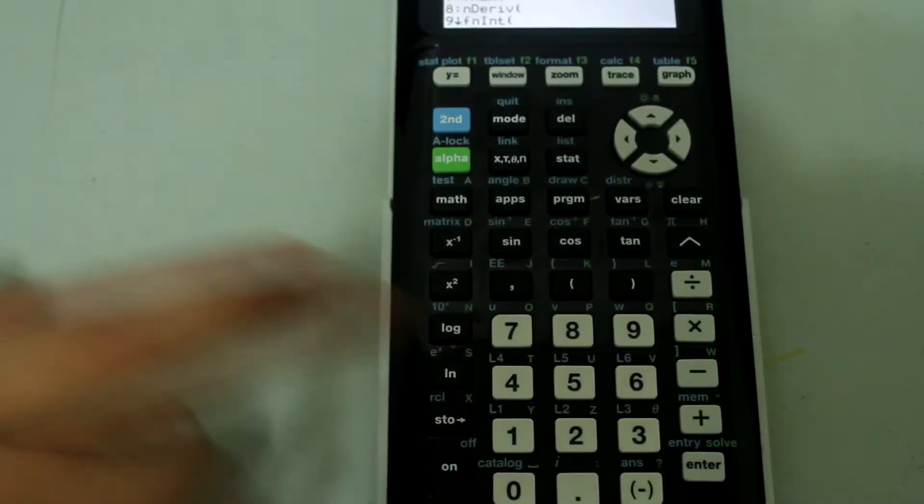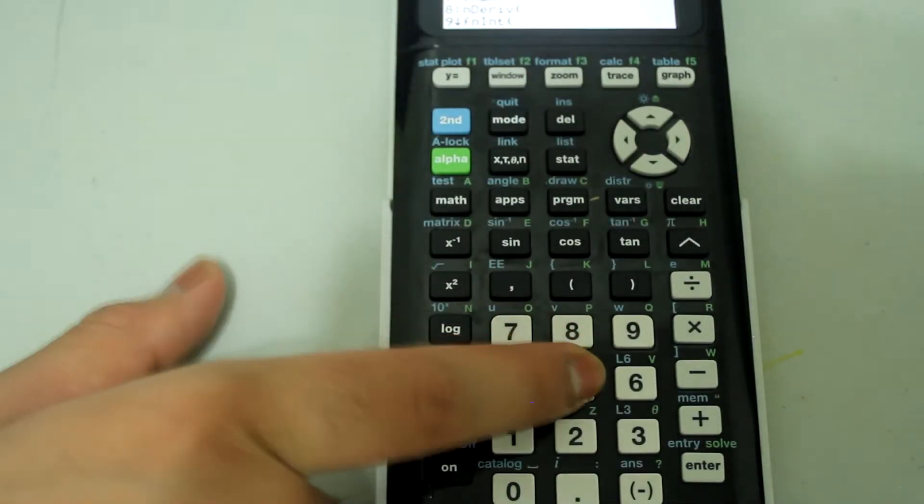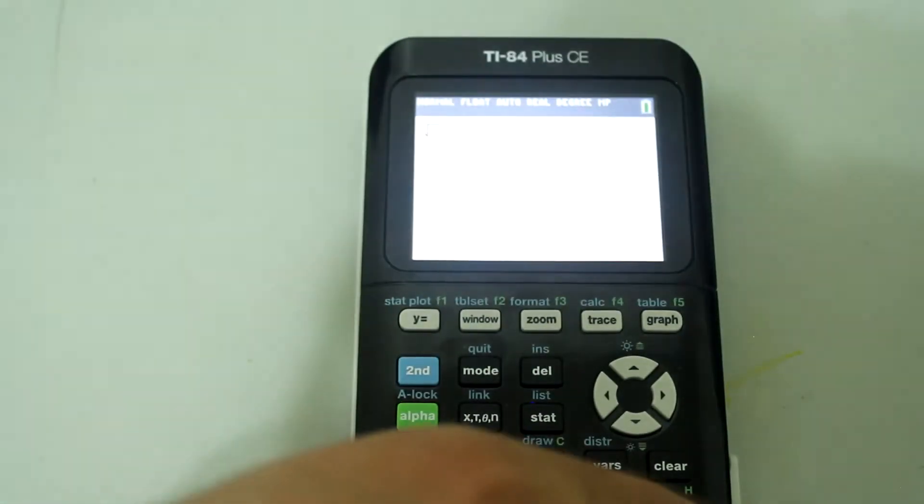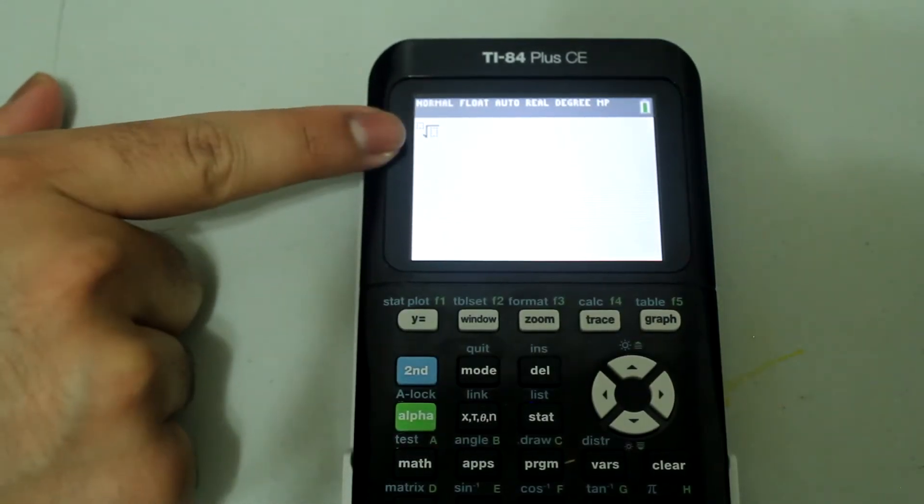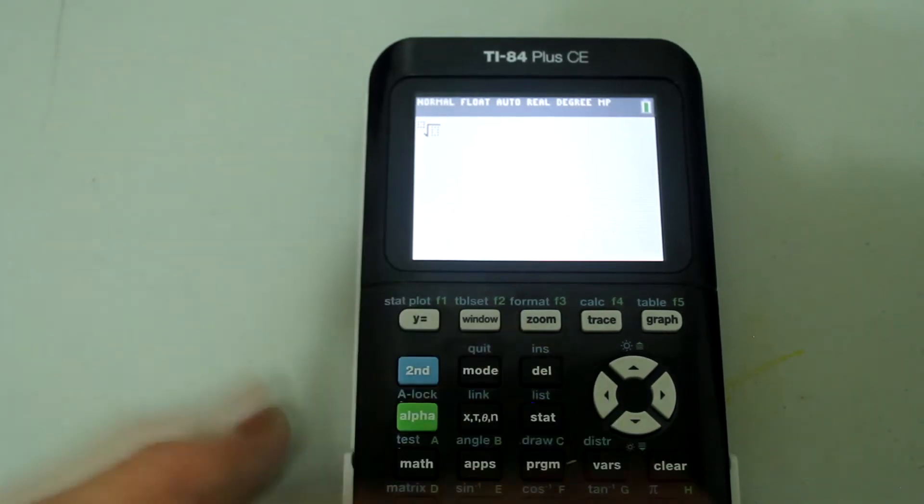And this comes up on the screen where you can select what's the index and you can select the entry inside the radical. For the index I'm going to type in four and then arrow over to the inside.